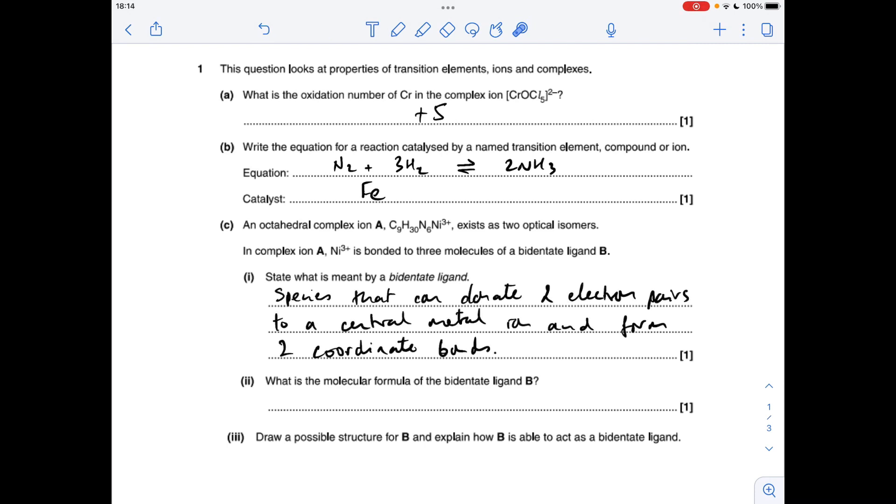Part C now, so what's meant by the term bidentate ligand? So that's a species that can donate two electron pairs to a central metal ion, and form two coordinate bonds, or two dative covalent bonds, in the process.